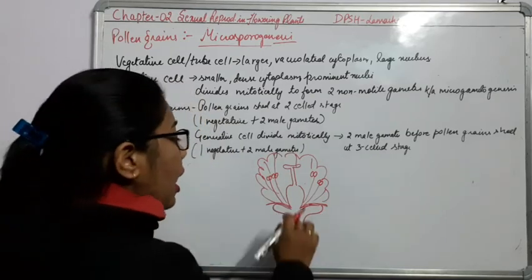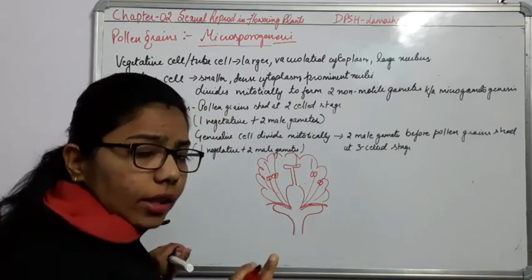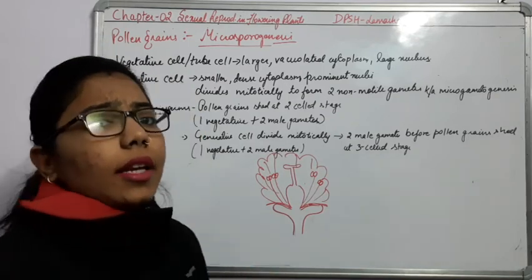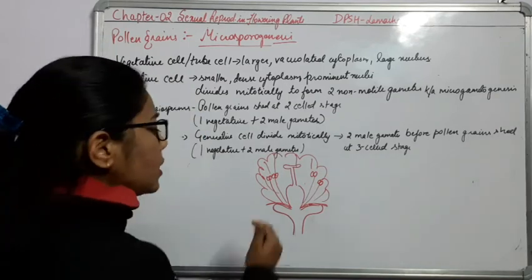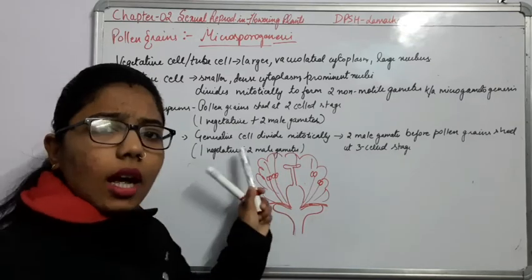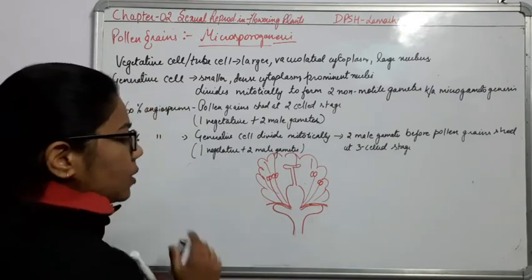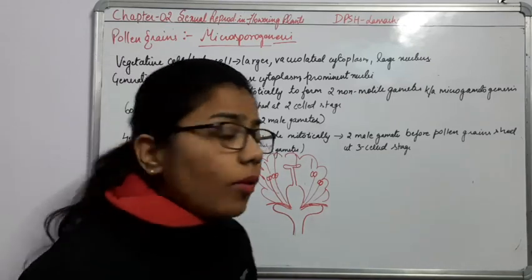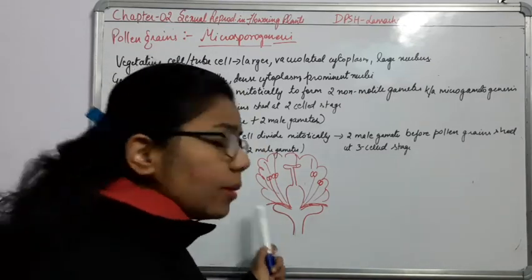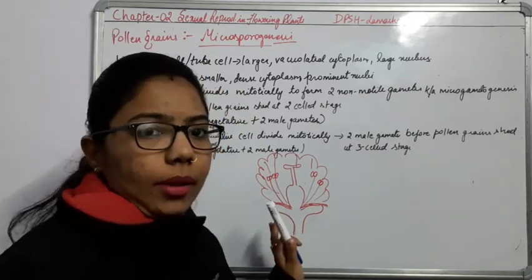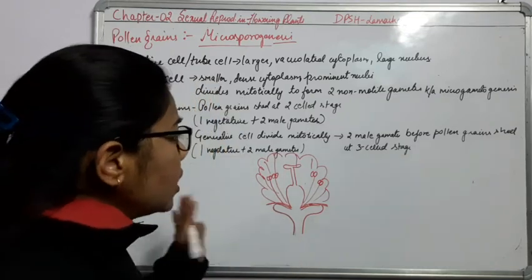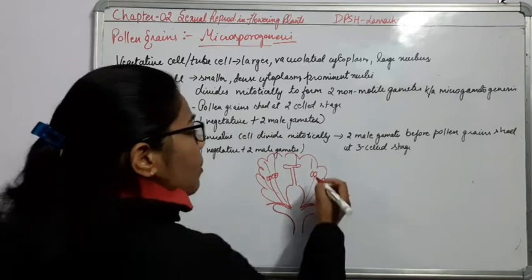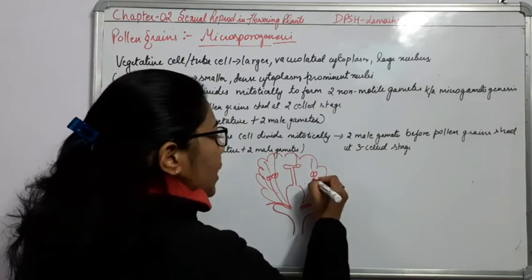The anthers have a stalk known as the filament, and again they are connected with the thalamus. The filaments are attached with the thalamus with the help of the proximal end of the filament — proximal is near and distal is far away from the thalamus. This is about the male gametophyte.